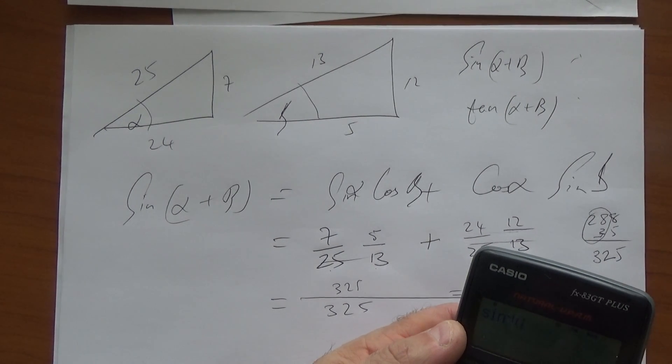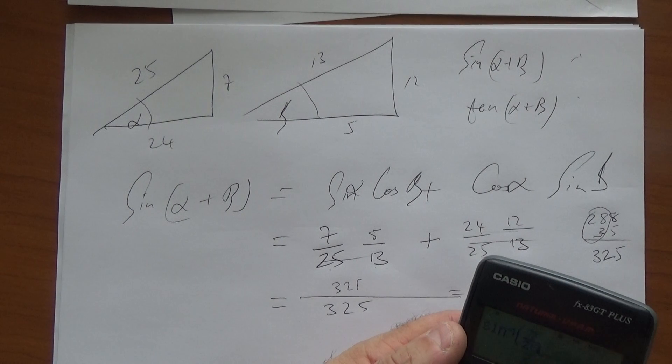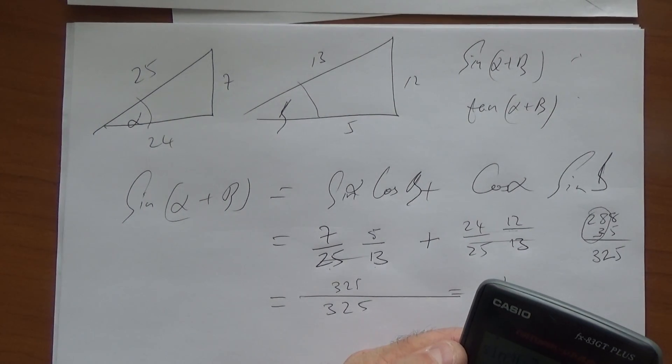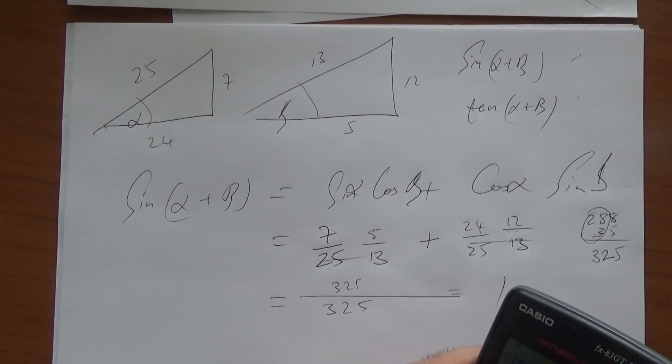Sine 7 over 25. Now this is an important part of finishing up the question. If nothing else, it's going to tell you, you know, you're wrong if you are wrong.